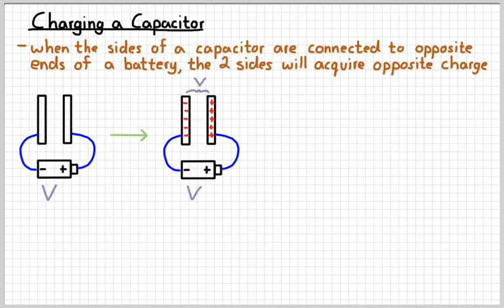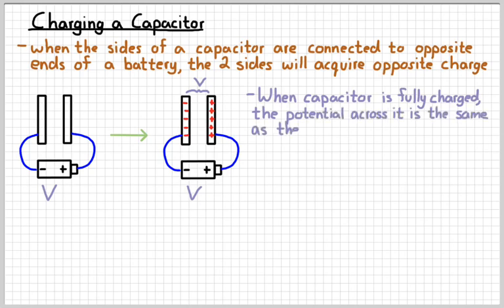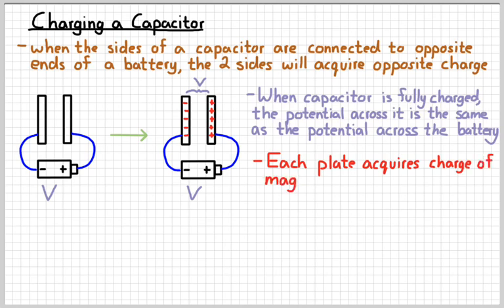When it reaches its full charge, the voltage difference across the capacitor is equal to the voltage of the battery. So if you connect a capacitor to a 9-volt battery, it will eventually acquire a potential difference of 9 volts. The charge on each plate is going to be called Q. And again, one acquires a positive Q, and the opposite side acquires the same charge, but just negative.